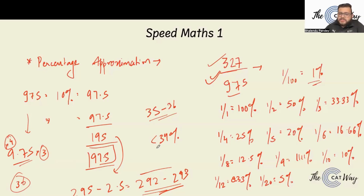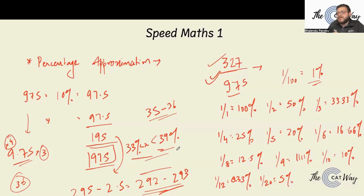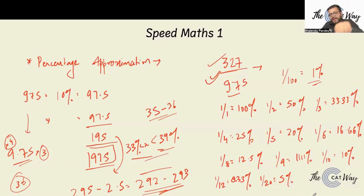We know the answer is between 33% and 34%. Among the options — 30%, 35%, 33.xx%, and 41% — since our calculated value lies between 33 and 34%, we directly mark option C, 33.xx%, as the right answer. That is how approximation helps, and these percentage figures play a very important role.